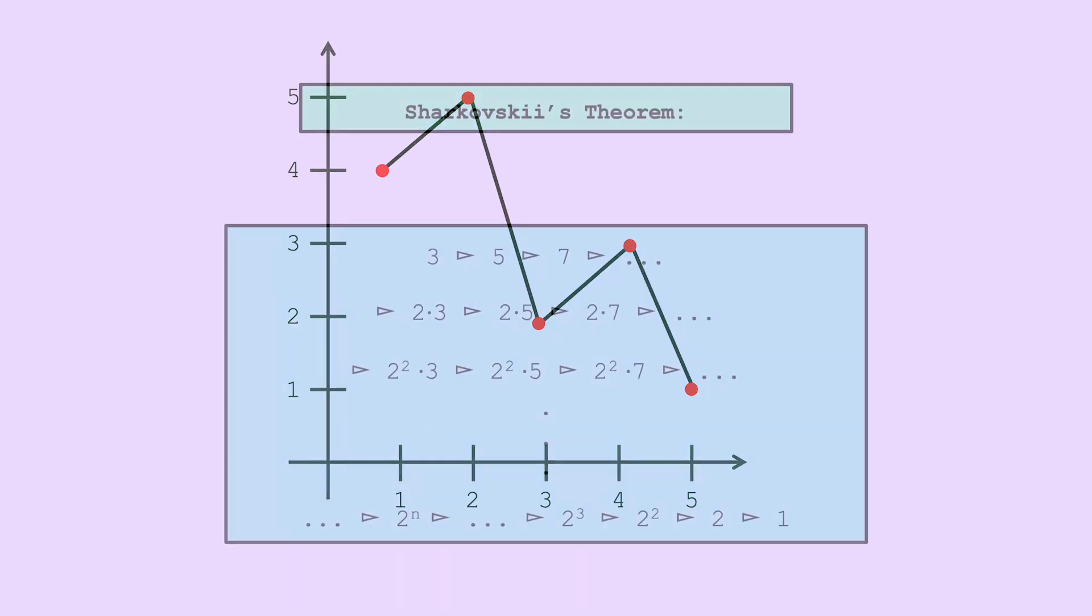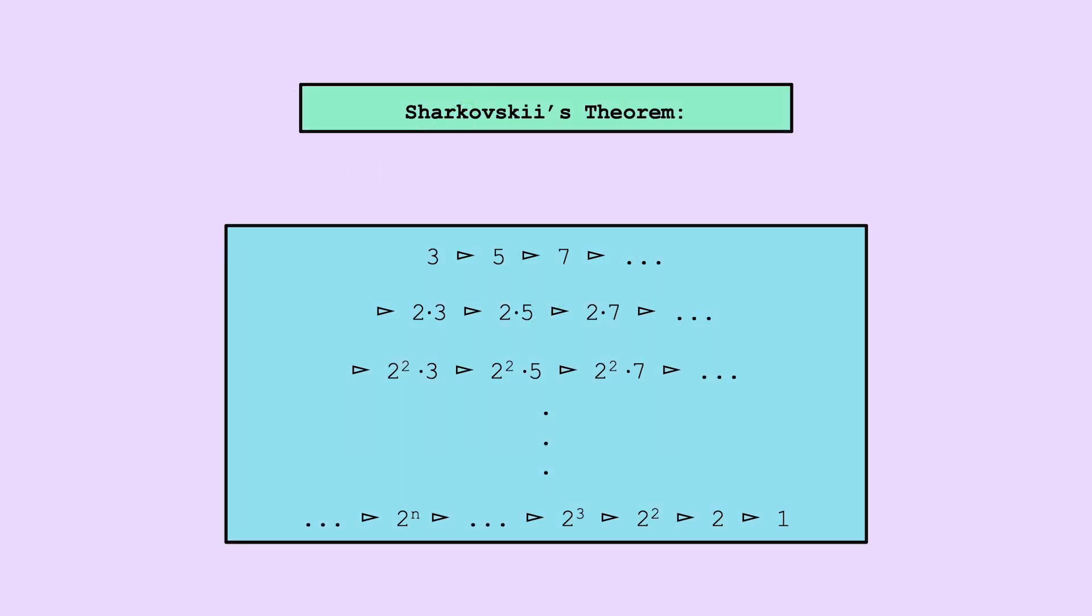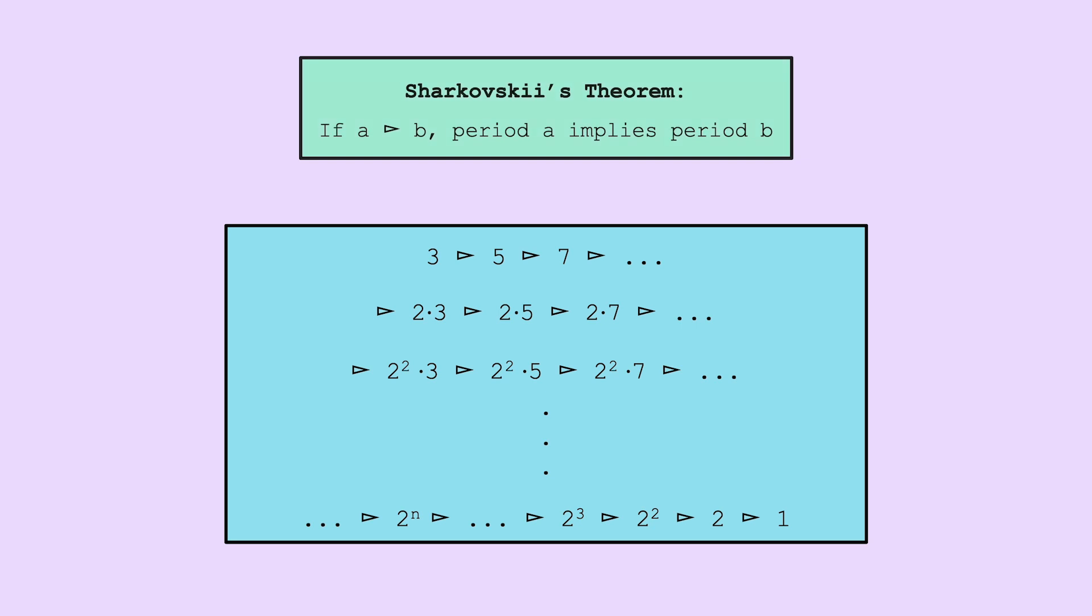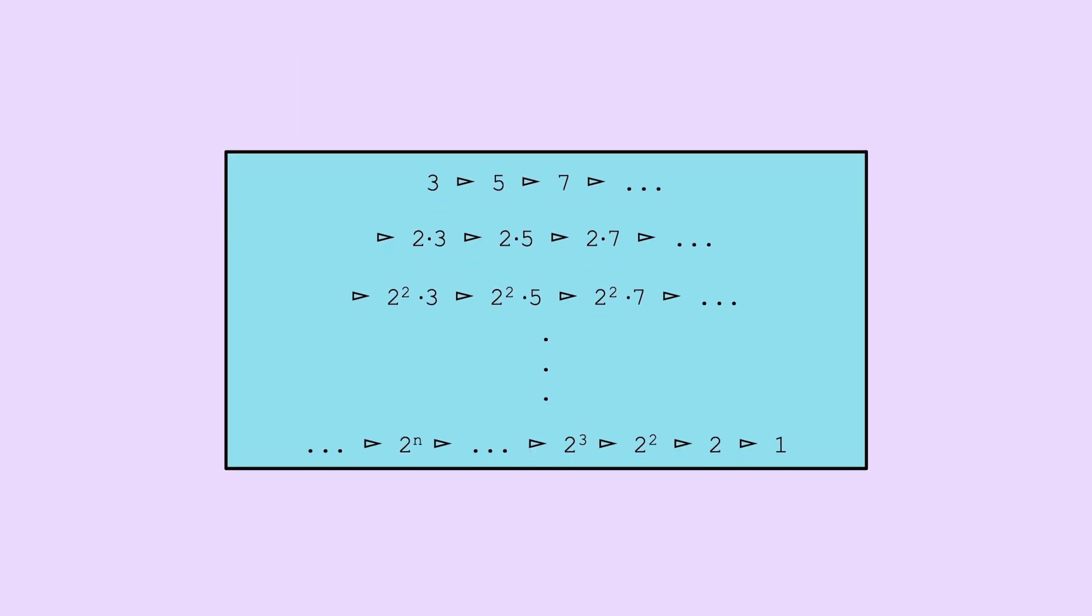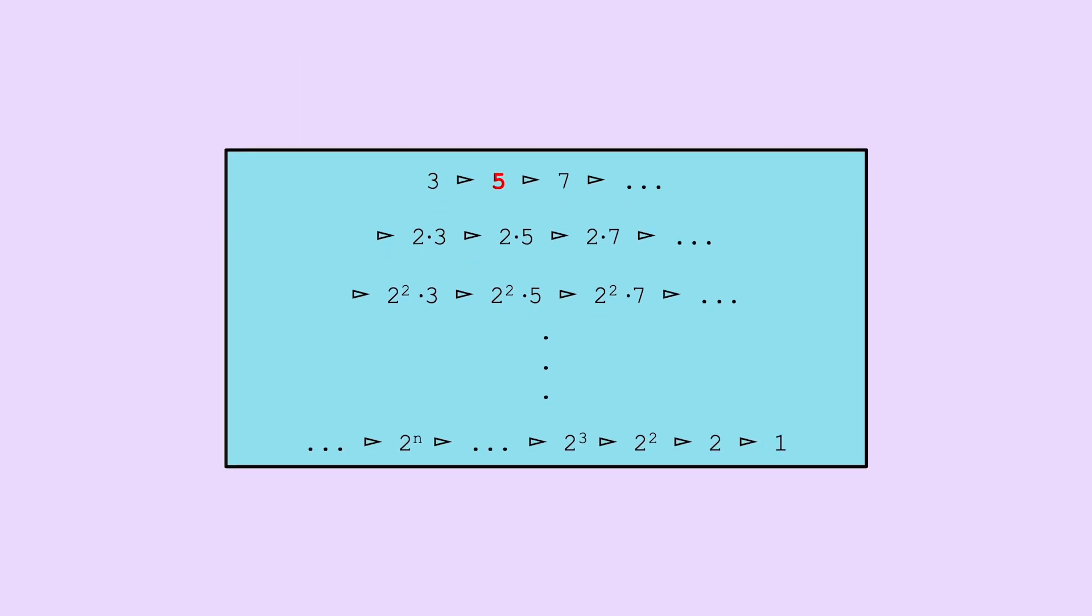That being said, there's a generalization of this result, called Sharkovskii's theorem, which gives an ordering of all natural numbers, where if there's a number with some period, there's a number with every period located after that number on the list. So period 5 does imply all periods, but it does imply every period besides 3. And the first number on the list, 3, must imply every other period.